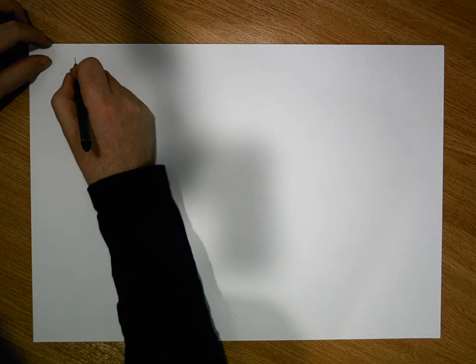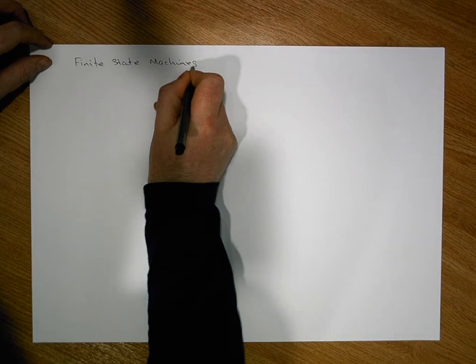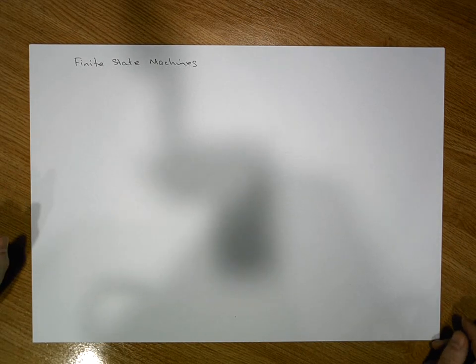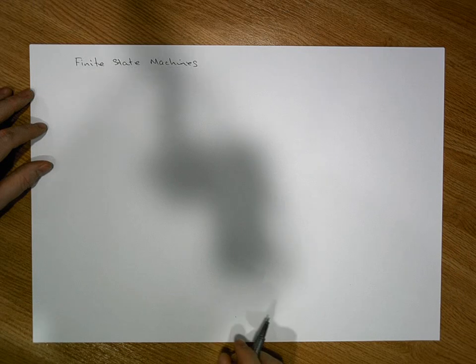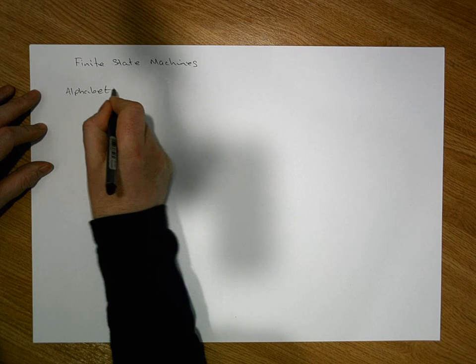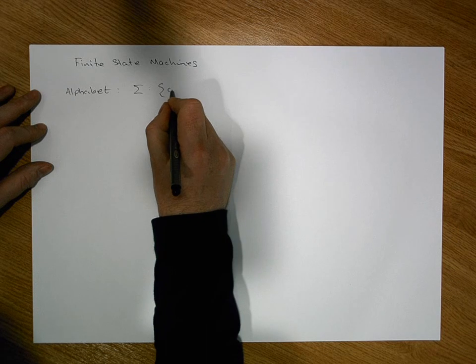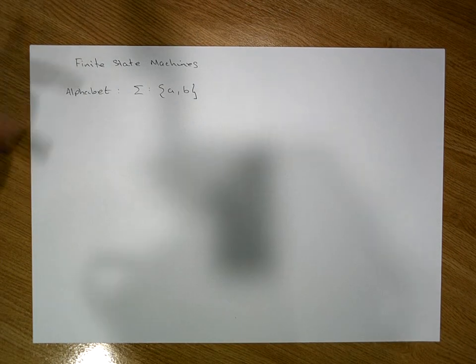Hi guys, this is Jonathan Lambert with the Mathematics Development and Support Service at the National College of Ireland. This short video is going to consider finite state machines, and more importantly, finite state machines that recognize particular finite languages, where the languages are composed of words constructed from a specific alphabet. The alphabet, symbolized by Sigma, consists of the characters A and B.